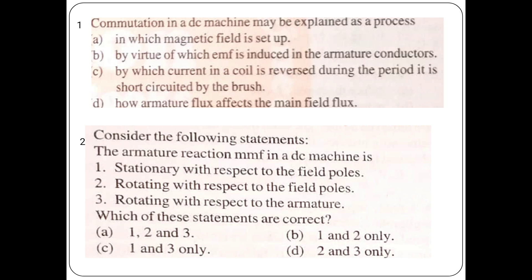Commutation in a DC machine is a process that may be explained as a process by which the current coil is reversed during the period it is short-circuited by the brush.